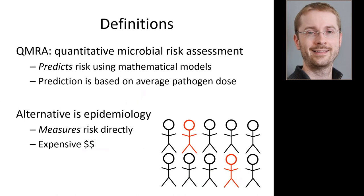Quantitative microbial risk assessment, or QMRA, is a way to predict that risk — to predict how many cases of illness we would find in an exposed population using mathematical models. The prediction is based on the average pathogen dose that someone ingests. The alternative is epidemiology, which measures risk directly. For a manure irrigation epi study, you would find exposed people, interview them, and determine how many became ill attributable to the irrigation. The problem with epidemiology is it's very expensive, probably about 10 times as expensive as QMRA.